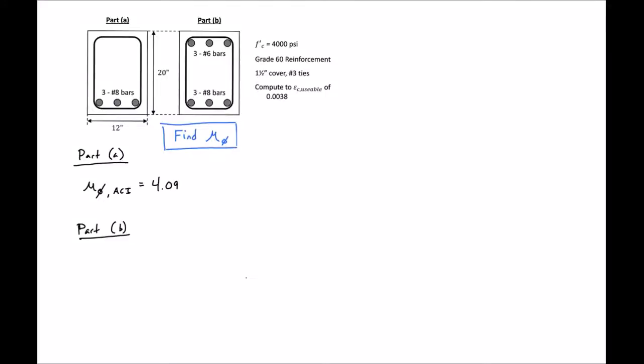In this example problem, we're going to find our moment curvature for a doubly reinforced section. We're going to use a singly reinforced section as a point of comparison. If we find our moment curvature for a singly reinforced section, we'll get a moment curvature value of 4.09.